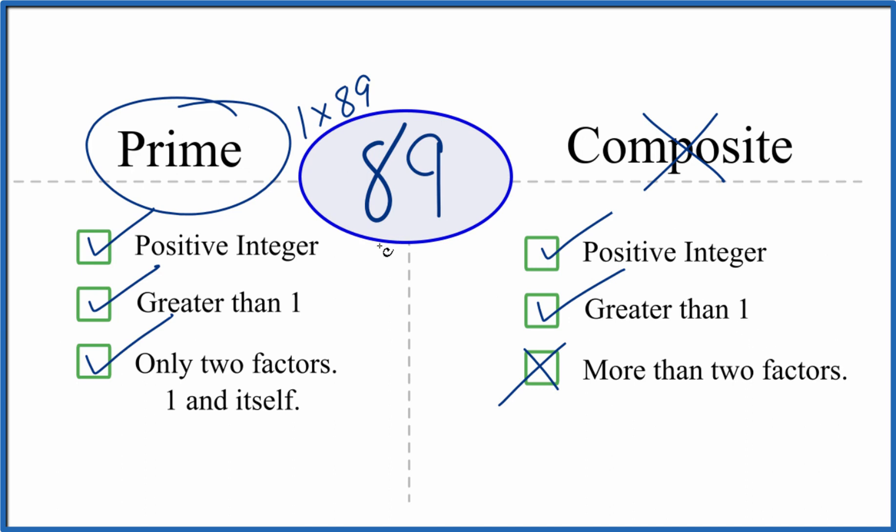This is Dr. B looking at whether 89 is a prime or composite number. It's prime.